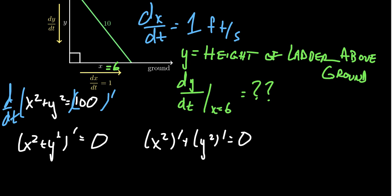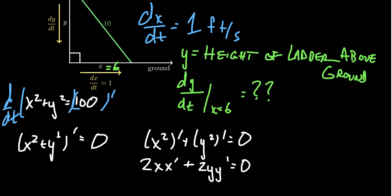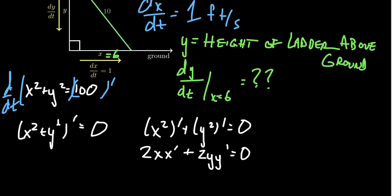We're taking the derivative with respect to time, not with respect to X or Y. So the derivative of X squared is 2X times X prime — we need that inner derivative because of the chain rule. Similarly, the derivative of Y squared gives us 2Y times Y prime. You cannot forget those derivatives, otherwise your calculation will be inaccurate.